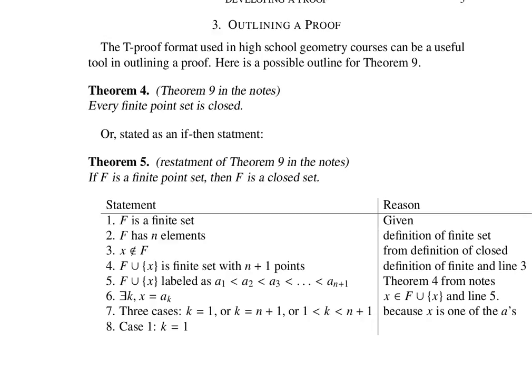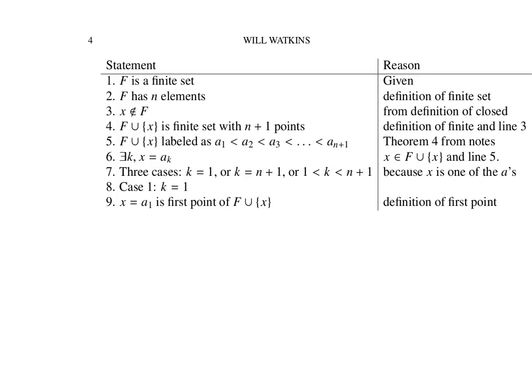So let's examine each case separately. So what if x is the first point of that union? But axiom 2 assures us that there's no first point in S, so therefore there has to be some point that precedes x, the first point of the union.